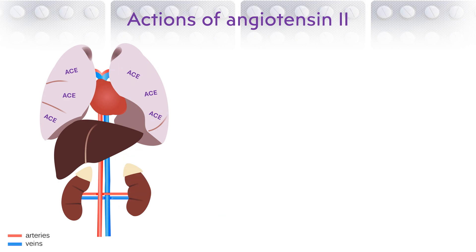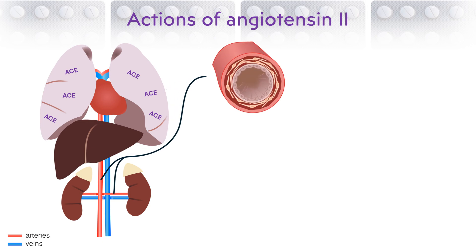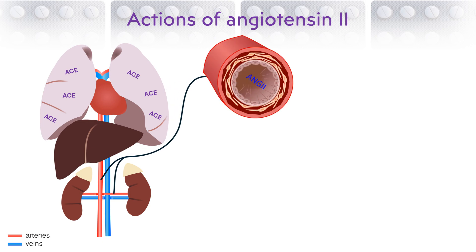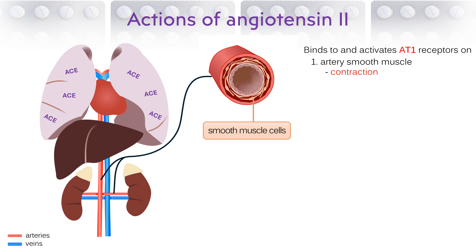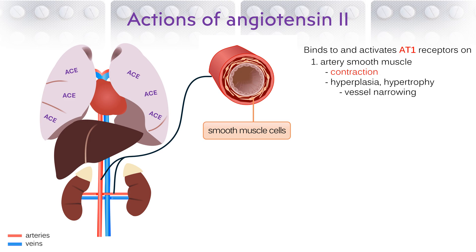Angiotensin 2 affects two main organs: the arteries and the kidneys. Looking first at the arteries, angiotensin 2 circulating in blood can access cells in the walls of arteries. Of most importance are the smooth muscle cells that wrap around the wall of the vessel. Angiotensin 2 binds to angiotensin AT1 receptors on the smooth muscle cells and causes the cells to contract. As the muscle cells shorten, arteries constrict, reducing the internal volume, which raises the pressure inside the artery, causing a rise in blood pressure. Activating the muscle AT1 receptors has the additional effect of stimulating hyperplasia and hypertrophy, which results in narrowing of the vessels.